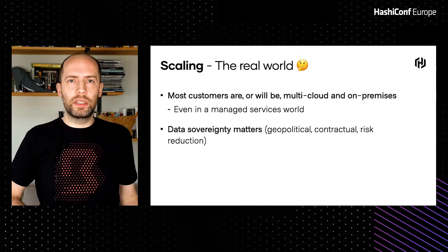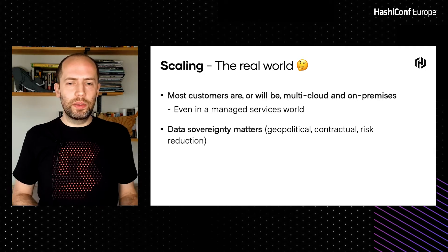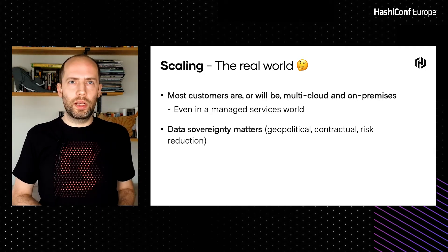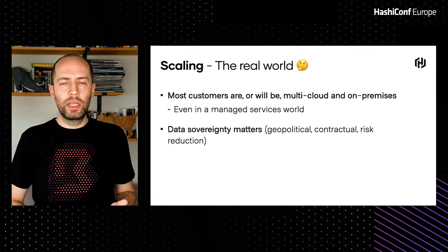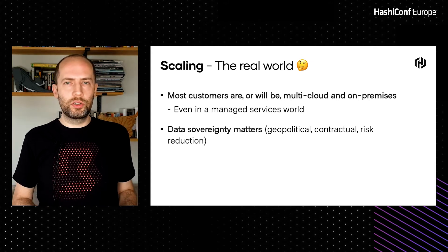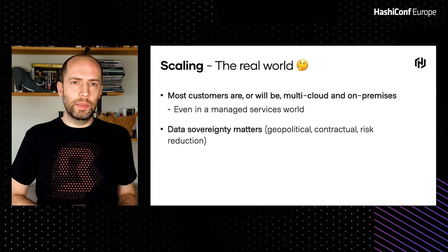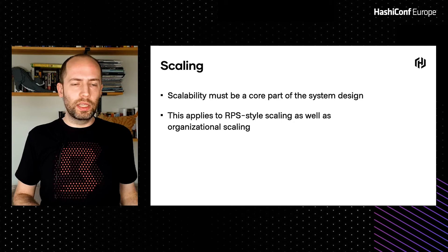For especially larger customers, many will be multi-cloud and on-premises for a long time. Even if they're moving to managed services, they're likely to have on-premises for a long time, and those managed services may be on various clouds. There are geopolitical and contractual obligations that require the use of some clouds or not others — where your data transits, where it's stored, where services are located matters a lot. We saw with Vault that AWS-centric solutions didn't flourish, whereas Vault did, partly because of its ability to run anywhere. Scaling must be a core part of the system design, applying both to requests-per-second style scaling as well as organizational scaling.